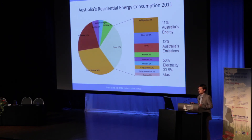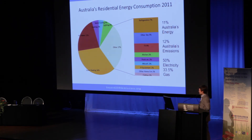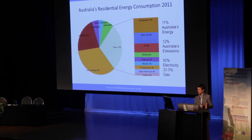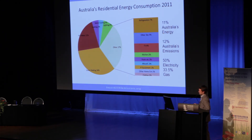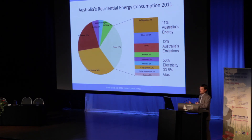In today's terms, our building sector still consumes lots of energy and isn't as efficient as it could be. A large chunk of the pie is space heating, particularly in Victoria. Hot water is one of the two main ones, plus electrical appliances, which are captured in the other category, representing around 35% of energy consumption. Lighting is still a reasonably large component. Residential is 11% of Australia's energy use, 12% of our emissions, about 50% of which is actually electricity and 33% is gas.